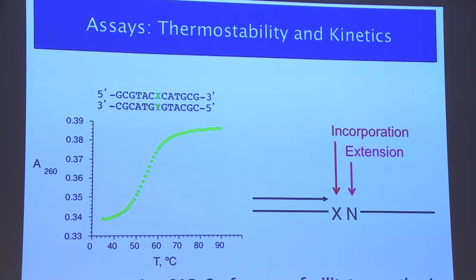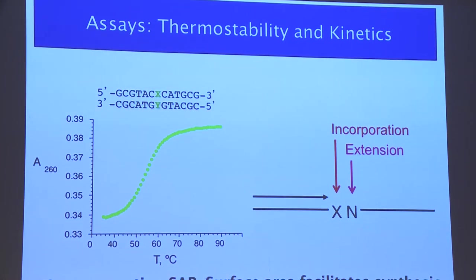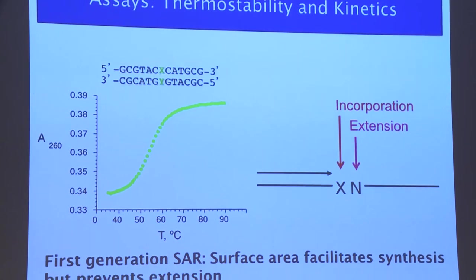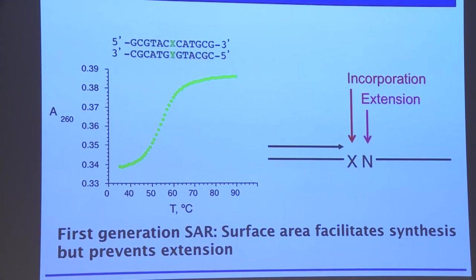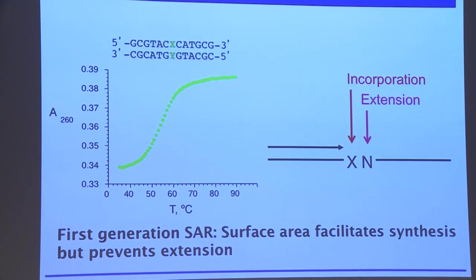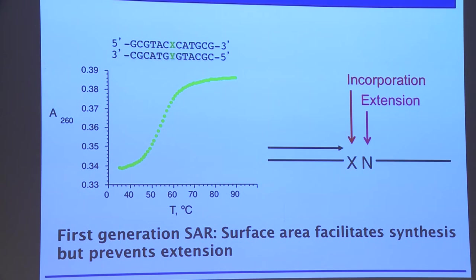By far the strongest SAR that came out of the first generation study was that large aromatic surface area very much facilitates the incorporation step, but it makes the extension step very challenging. We were able to optimize the incorporation but were never able to optimize the extension.